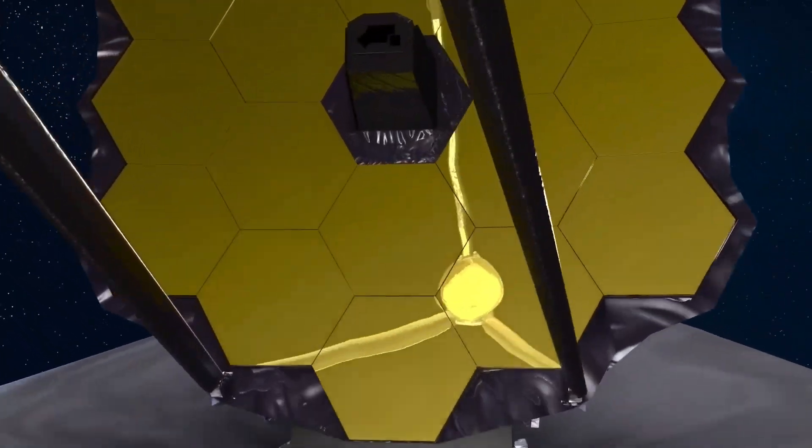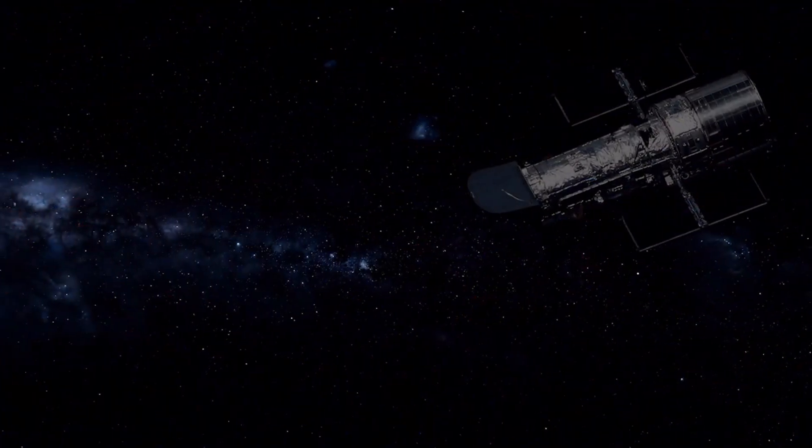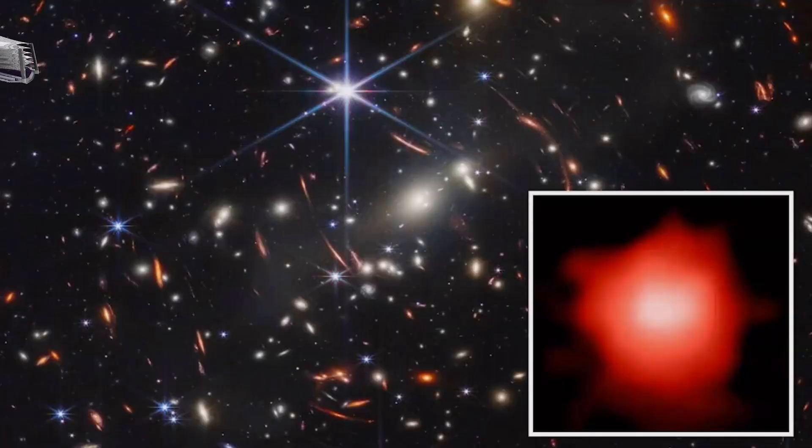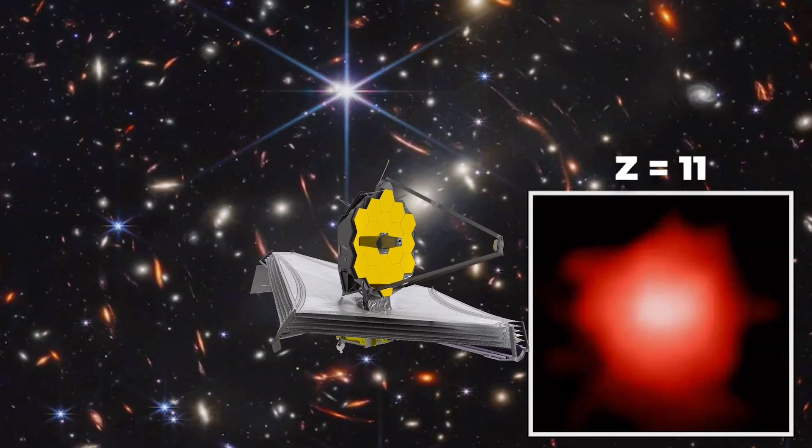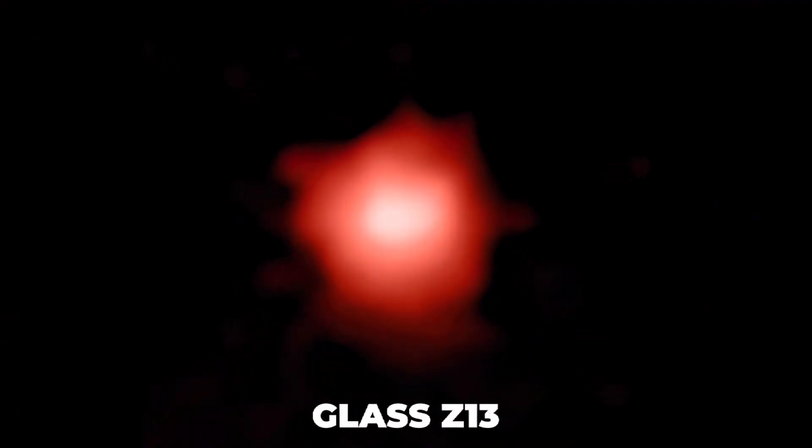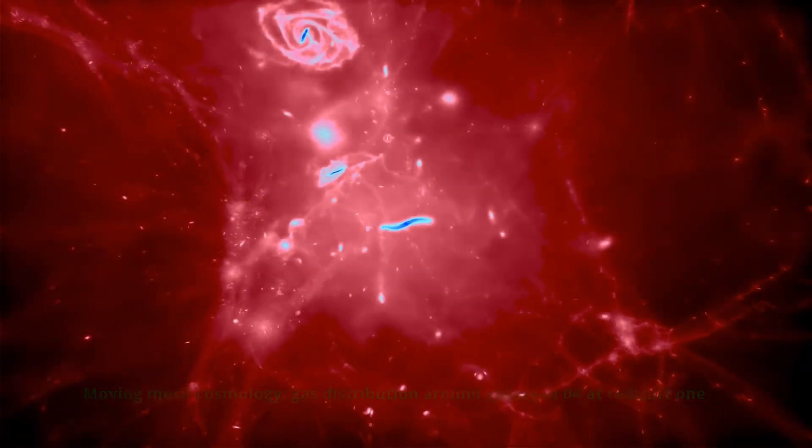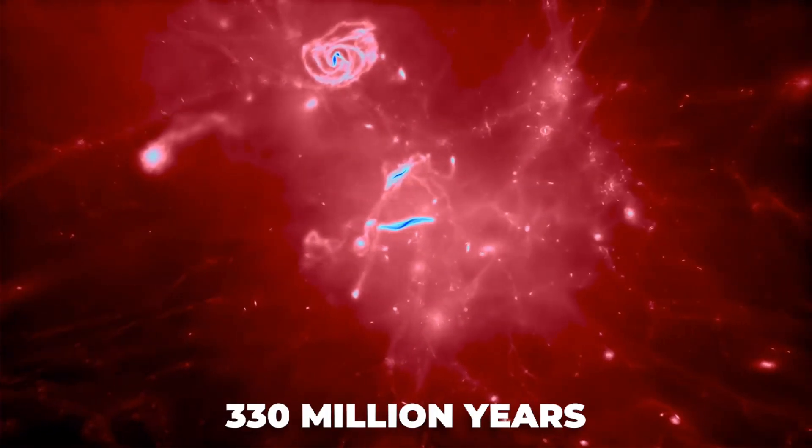Instead, James Webb Space Telescope is able to see much, much further. In terms of redshift, Hubble was able to reach Z equals 11, while James Webb reaches Z equals 13. For example, for glass Z-13, the redshift of 13 gives us the age of about 330 million years.